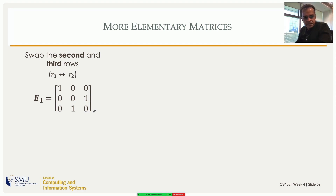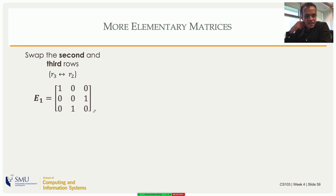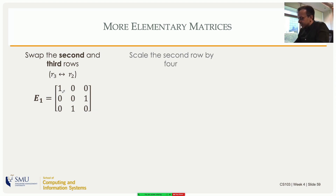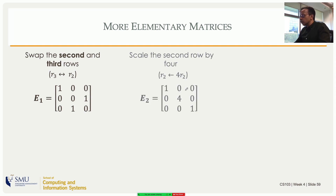If you look at this elementary matrix, what I did was take the identity matrix and swap its second and third rows. That is exactly what it's going to do to any matrix. Now, what's the determinant of this? If you swap two rows, the determinant changes sign, so the determinant is minus one. Now if I scale the second row by a factor of four, I replace the second row in the product by four times the current second row.